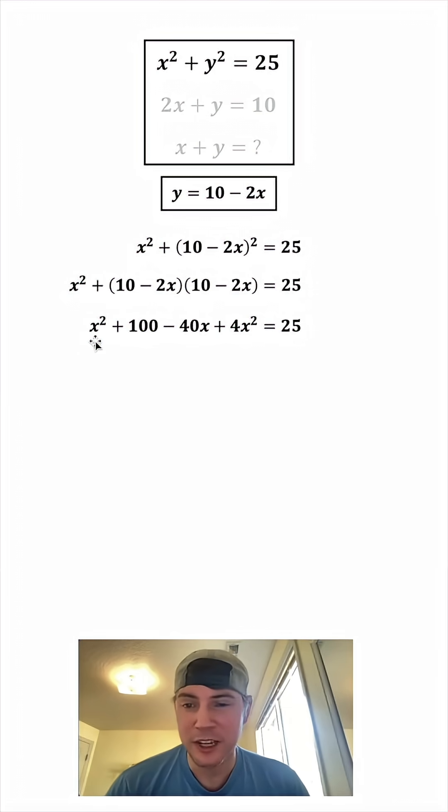So now let's combine like terms. X squared plus 4X squared is 5X squared. We can bring down the negative 40X. And if we subtract 25 from both sides, 100 minus 25 is 75, and 25 minus 25 is 0. From here, all three of these terms are divisible by 5, so let's divide both sides by 5. Each of these terms will divide by 5 to give us X squared minus 8X plus 15, and it's still equal to 0.